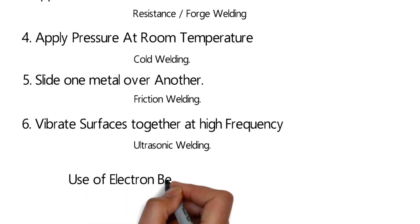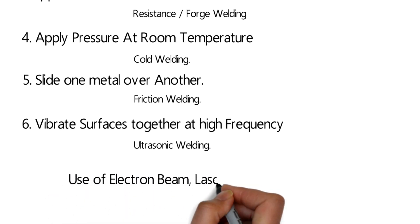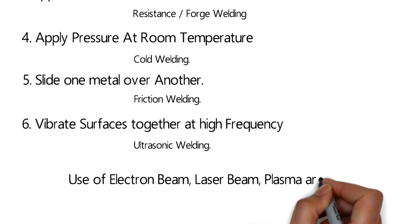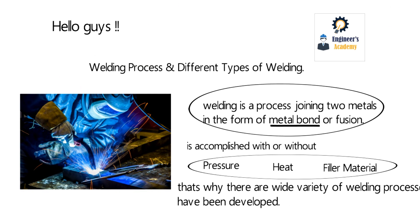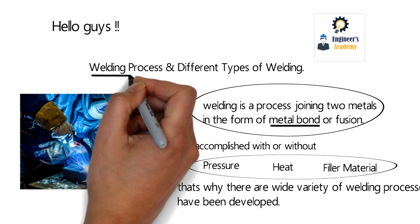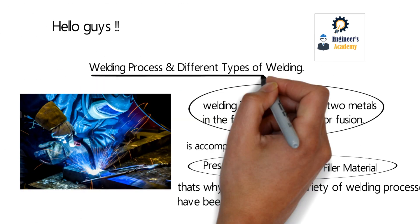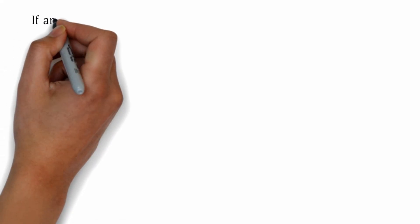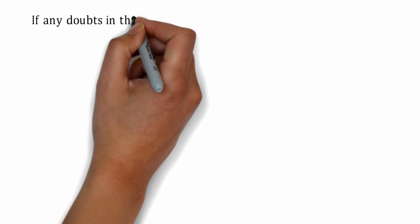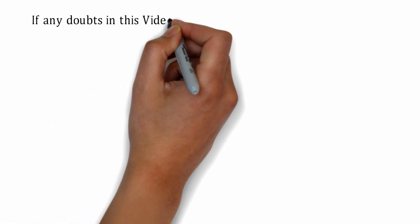These are the common types of welding used in many industries. There are also other advanced types, including the use of electron beam, laser beam, plasma arc, and other exothermic reactions.